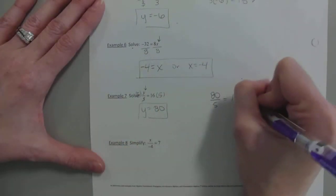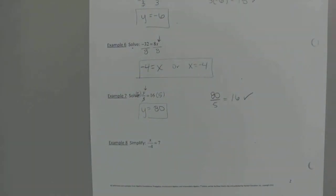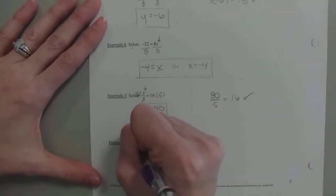And again, you can check it. What is 80 divided by 5? 16. So you can just plug it back into that original.